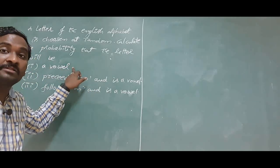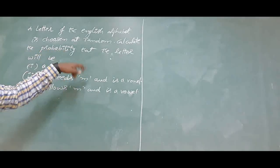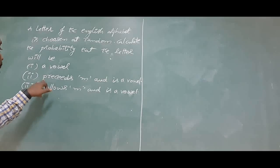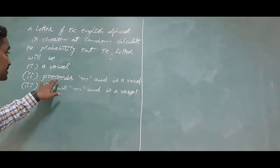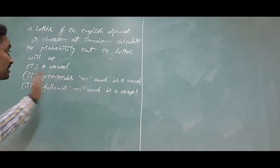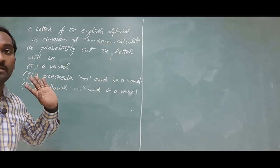First of all you have to find probability of that event. What is the probability that the letter would precede M and is a vowel? What is the meaning of precedes? Before the M, previous letters of M and it should be a vowel.